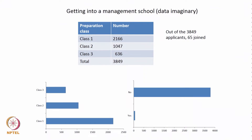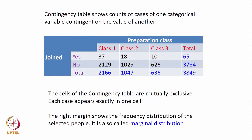We have seen this before — data of getting into a management school, imaginary data. We assume that 3849 applicants were there, belonging to three preparation classes with numbers 2166, 1047, and 636. Then 65 people joined. The contingency table shows the counts of cases of one categorical variable contingent on the value of another.